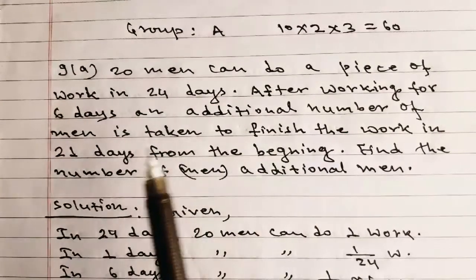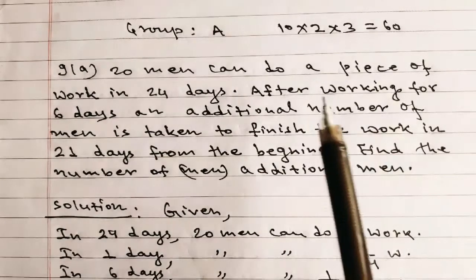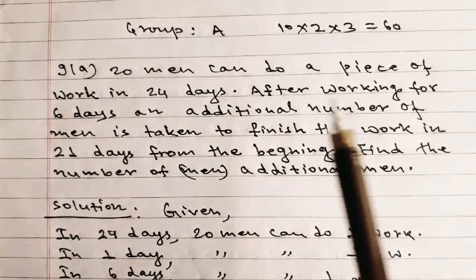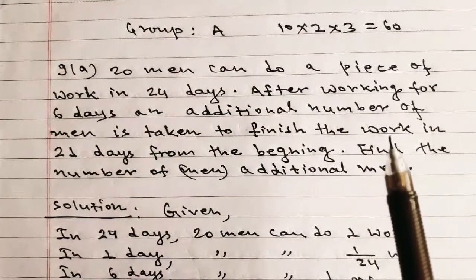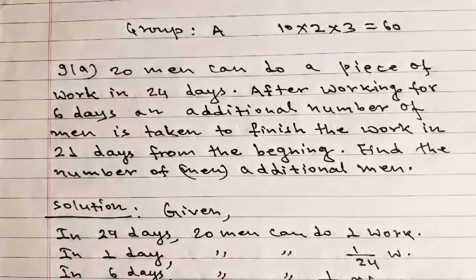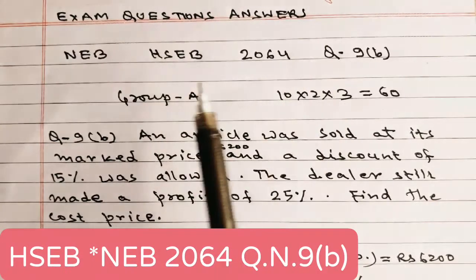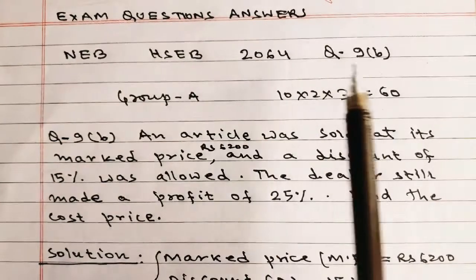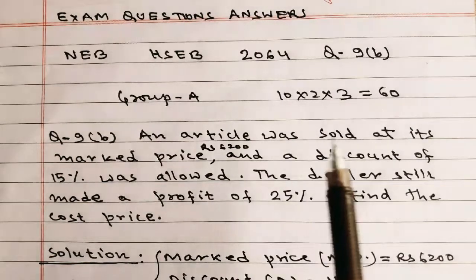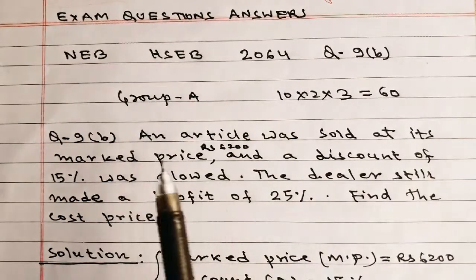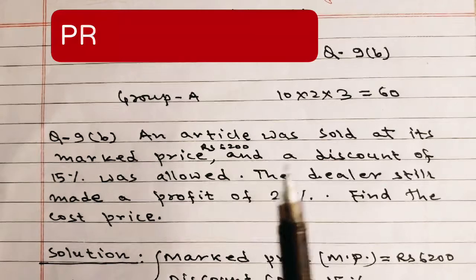Therefore, 4 additional men are needed to complete the work in 21 days from the beginning, given that 20 men can do the piece of work in 24 days and after working six days additional men are taken. Now question 9b: an article was sold at its marked price for rupees 6200 and a discount of 15% was allowed; the dealer still made a profit of 25%. Find the cost price.